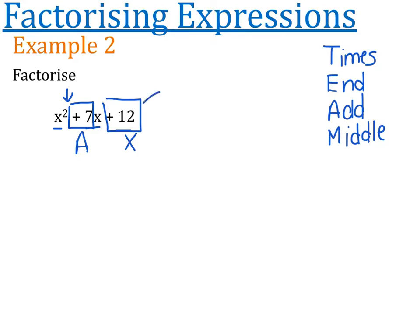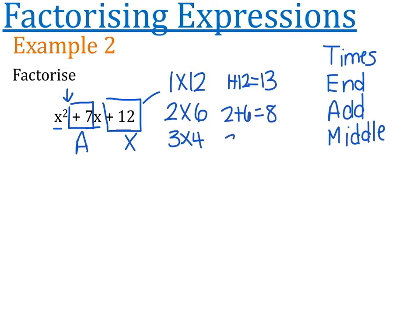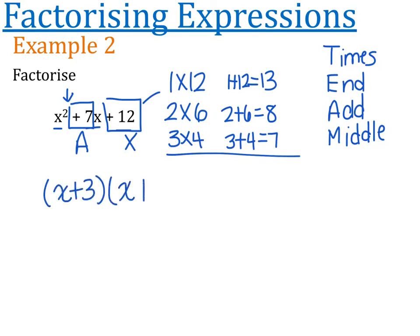They have to multiply to 12 and also add up to give us 7. What numbers multiply to 12? 1 times 12, 2 times 6, 3 times 4. Checking: 1 plus 12 is 13, 2 plus 6 is 8, and 3 plus 4 is 7 - so that's the combination we want. I write that in my two brackets: (x + 3)(x + 4). The order doesn't matter. This is the reverse of what we did yesterday - yesterday we started with two brackets and ended with an expression; today we do the opposite.